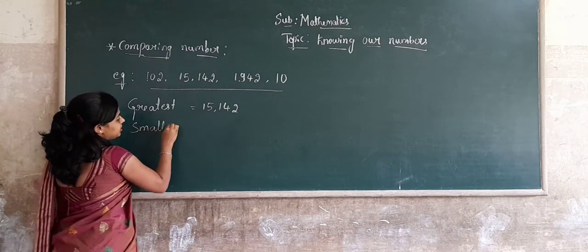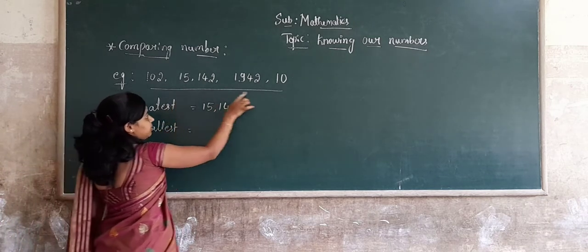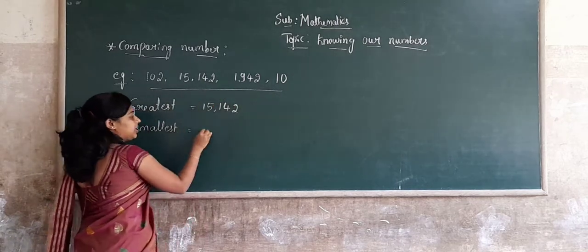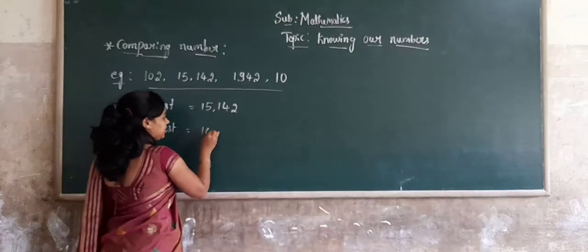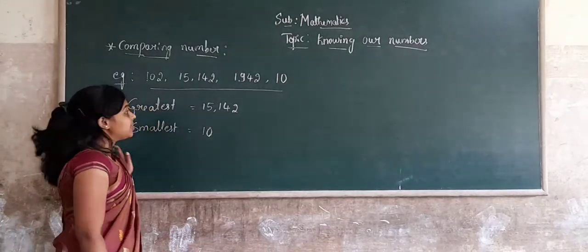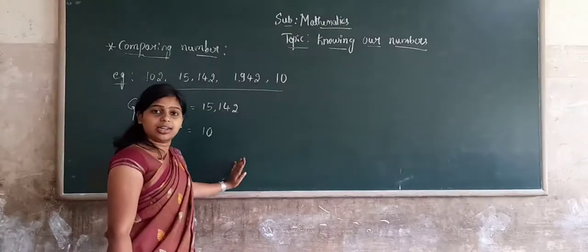Observe all these numbers. The smallest number is 10. In your previous class, you have already learned this. So when all numbers have different digit counts, identifying greatest and smallest is straightforward.